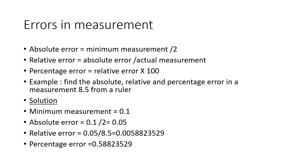The relative error is given by the absolute error divided by the actual value — this formula applies everywhere, whether for measurement or operations. What changes is only how you calculate the absolute error. For our example: 0.05 divided by 8.5 gives 0.0058823529. Write whatever appears on the calculator screen. The percentage error is the relative error times 100, giving 0.58823529.